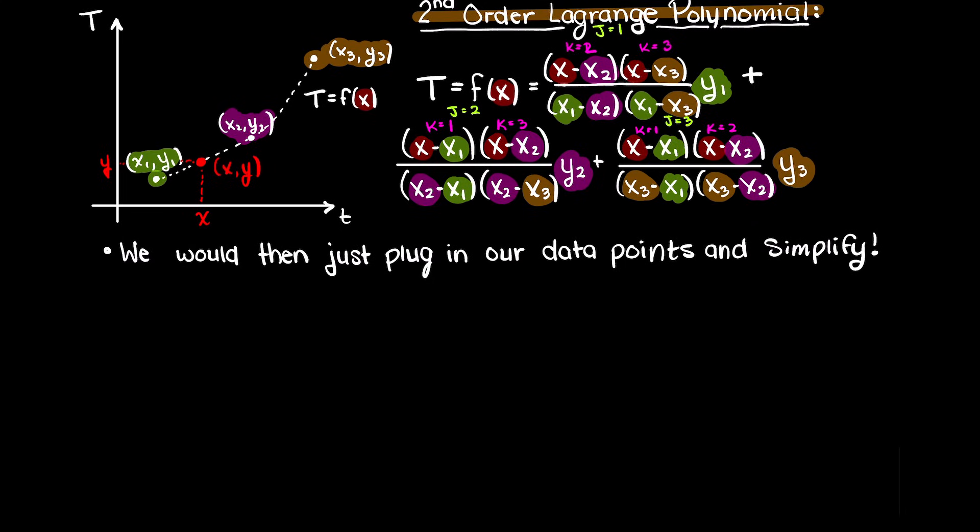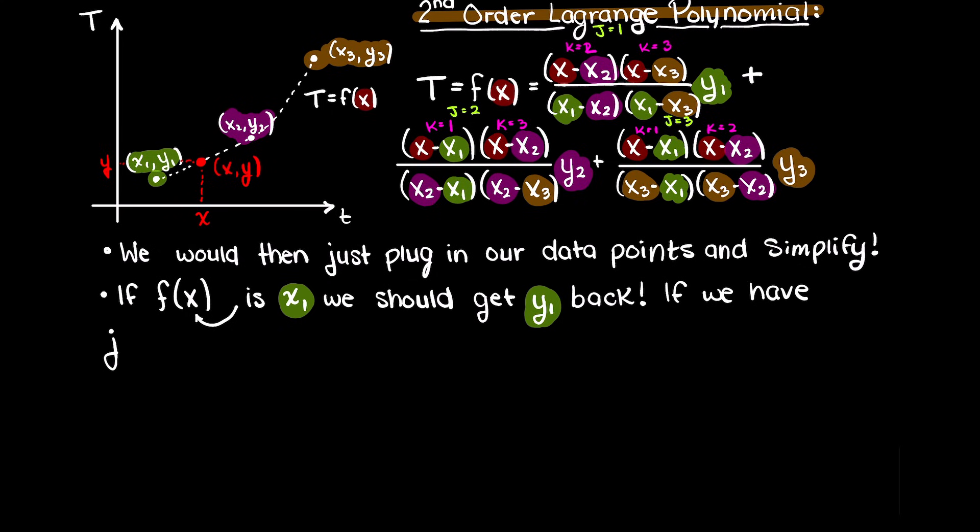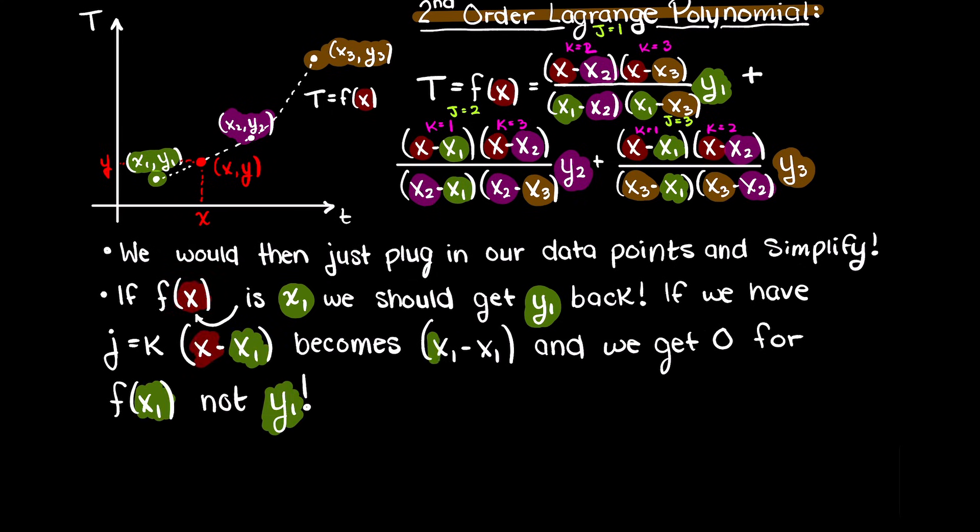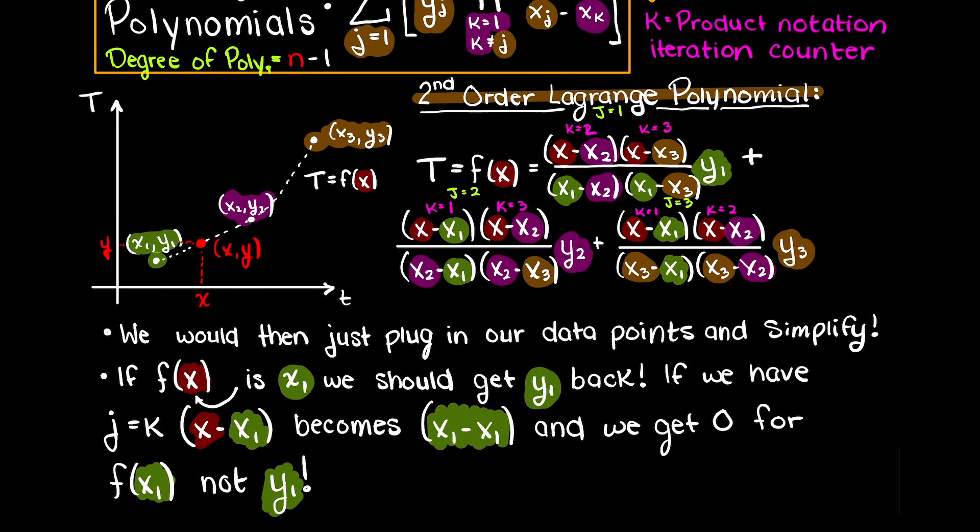Well you can see that no matter what, terms 2 and 3 go to 0, as x1 minus x1 gives 0. Well then we are just left with this first term. x1 minus x1 will again give us 0, whereas we know the answer should be y1, and this is why we remove the terms where k equals j.